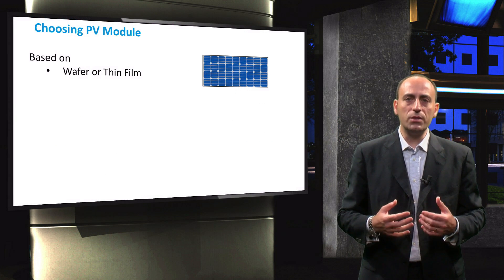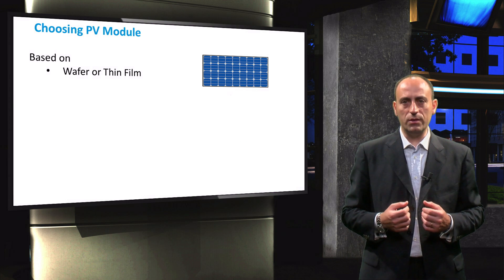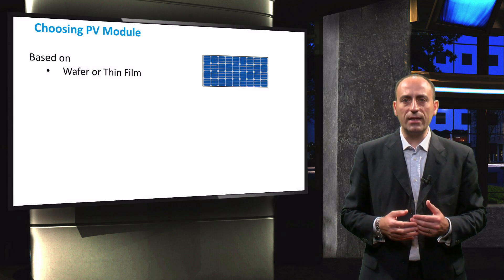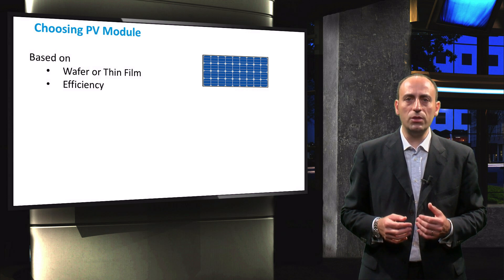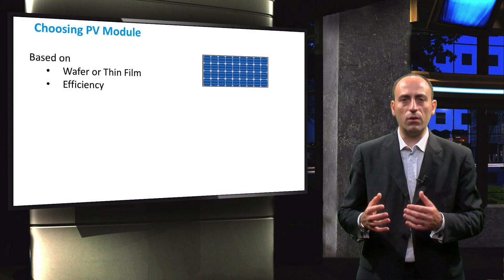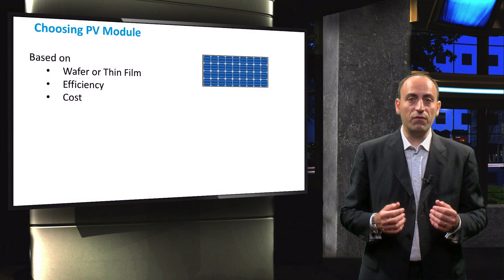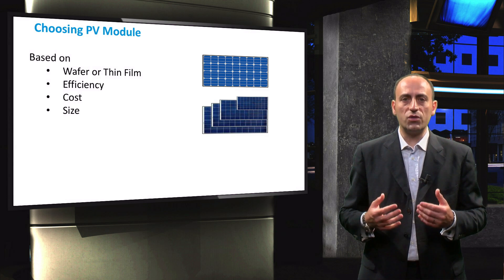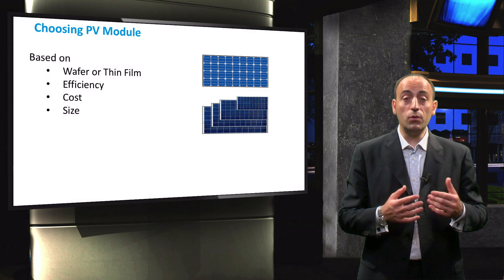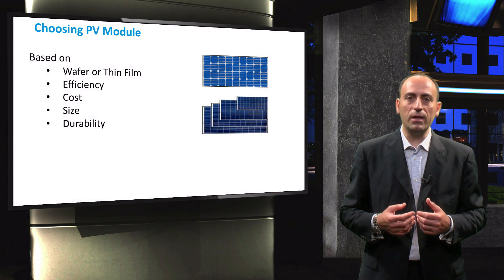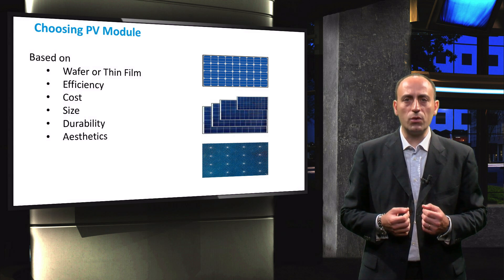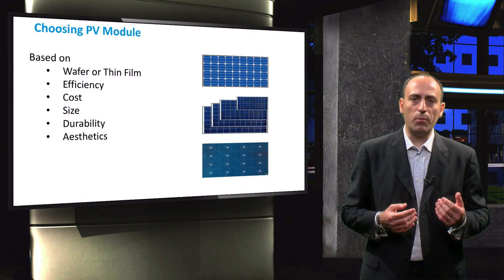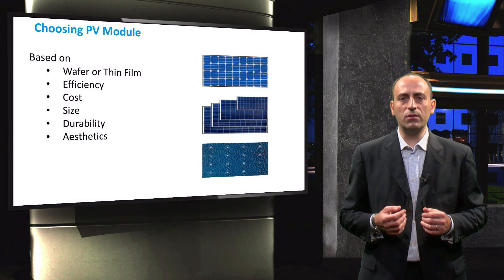Let's start by choosing a type of PV module for the system. The modules can be selected based on a variety of factors. The choice could be based on the type of PV technology such as wafer-based or thin film, on the conversion efficiency, cost or size of the module. Even the durability or the aesthetic appeal can influence the module selection. At the end of the design process you can always pick a different type of PV module and reiterate the design process.